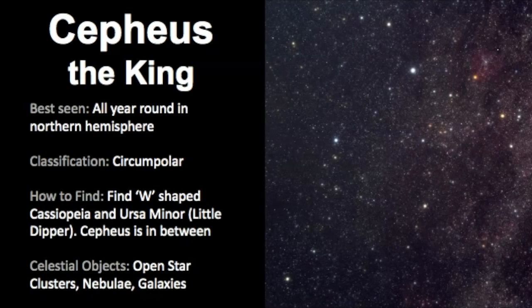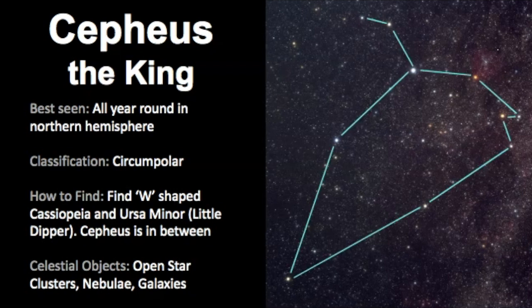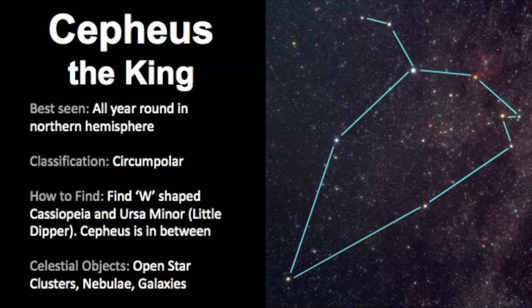We've come to the end of our video about Cepheus so let's review everything we learned so far. Cepheus is represented as a king and he can be seen all year round in the northern hemisphere which classifies him as a circumpolar constellation. The best way to find him is to find the w-shaped Cassiopeia constellation and Ursa Minor which is also known as the Little Dipper. Cepheus is then in between those two. There are a variety of celestial objects that sit within the boundaries of Cepheus but many of them such as the open star clusters, nebulae, and galaxies all need magnification in order to be seen. This is one version of what the star pattern looks like. This is the official star pattern but I often just see these five stars right here in the pattern when I'm viewing Cepheus.